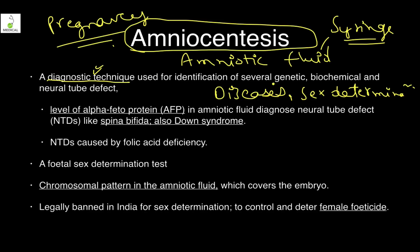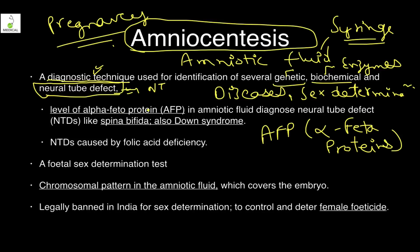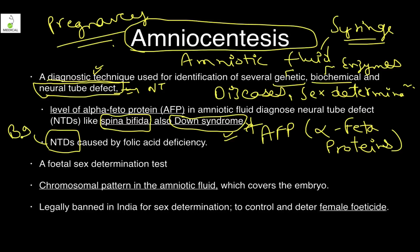Amniocentesis is a diagnostic technique used worldwide to identify genetic, biochemical, and neural tube defects. Genetic defects appear as chromosomal abnormalities; biochemical defects show as enzyme deficiencies — for example, albinism, phenylketonuria, and alkaptonuria. Neural tube defects occur when the neural tube fails to close. They are detected by measuring the level of alpha-fetoprotein (AFP) — when AFP levels change, it indicates a neural tube defect, for example in spina bifida and Down syndrome.